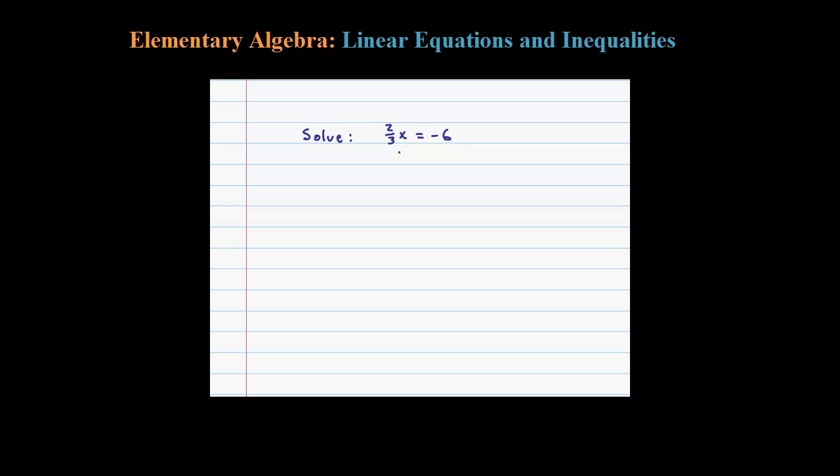Here we're asked to solve 2/3x equals negative 6. I'm going to show you two ways to do this, but certainly the traditional method here is to divide both sides by the coefficient of the x.